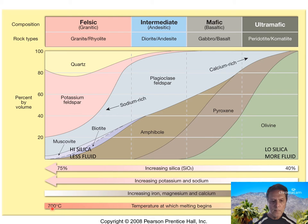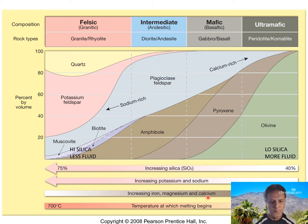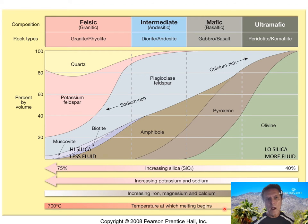One more thing: felsic igneous rocks form at a lower temperature than mafic rocks. The temperature at which melting begins for a felsic rock is only about 700 degrees centigrade, whereas a mafic rock — because it contains more iron and magnesium — melts at a higher melting point.